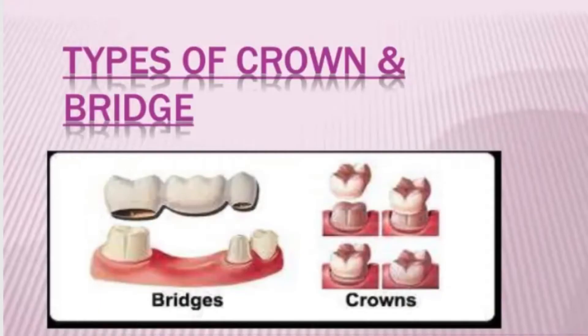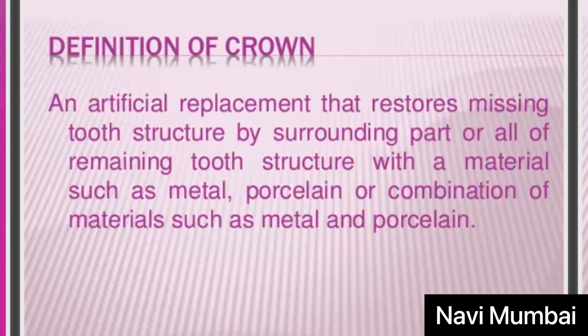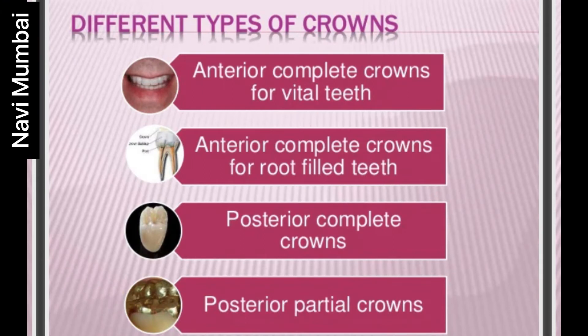Let's begin the video. Starting with the definition: what is a crown? A crown is an artificial replacement that restores missing tooth structure by surrounding part or all of the remaining tooth structure with a material such as metal, porcelain — that is a tooth-colored material — or a combination of materials such as metal and porcelain.